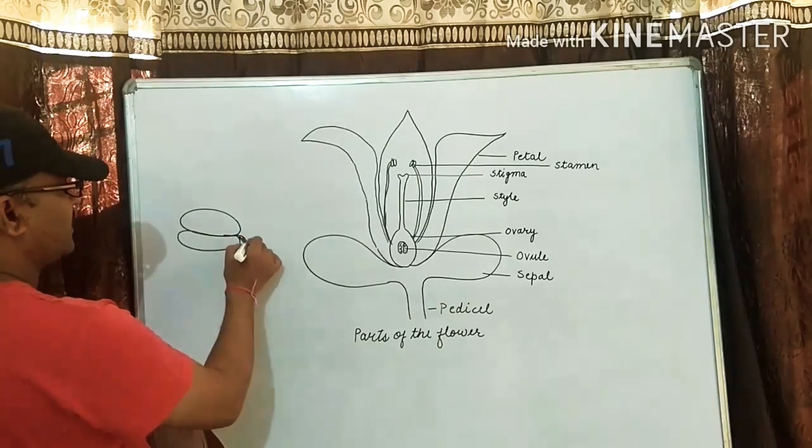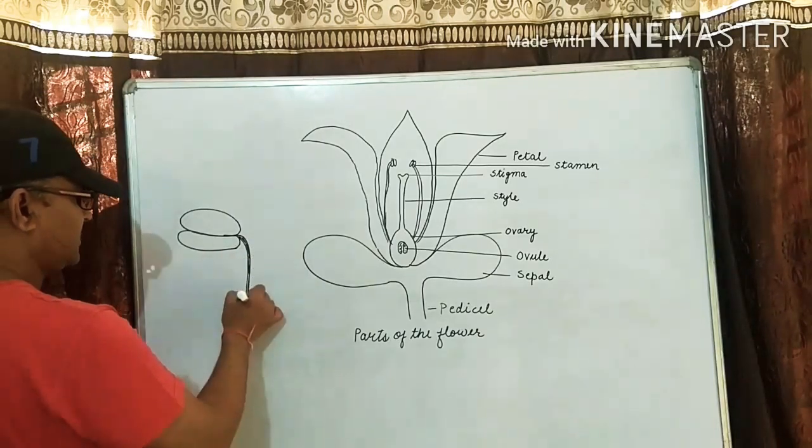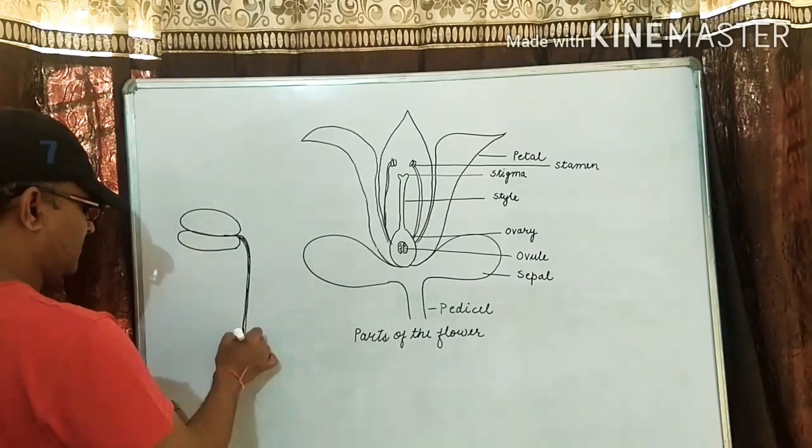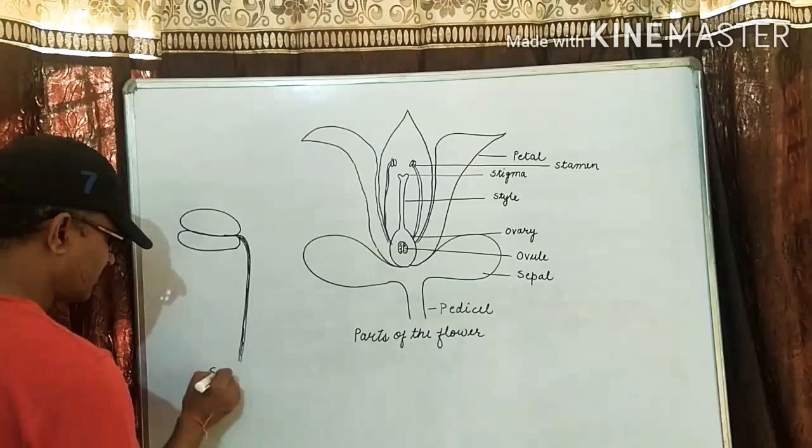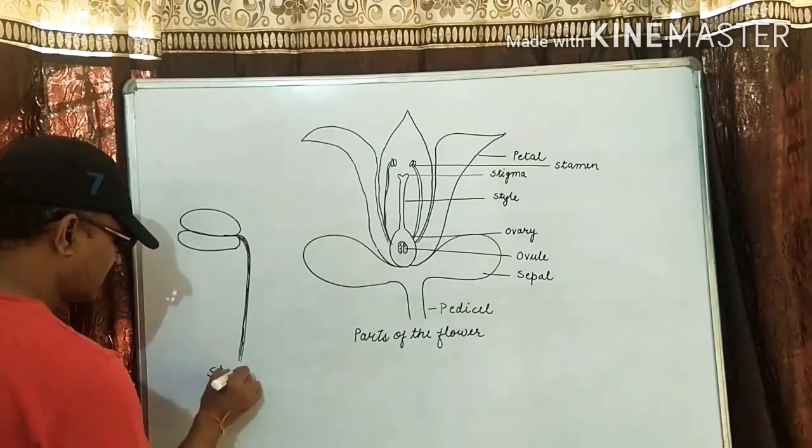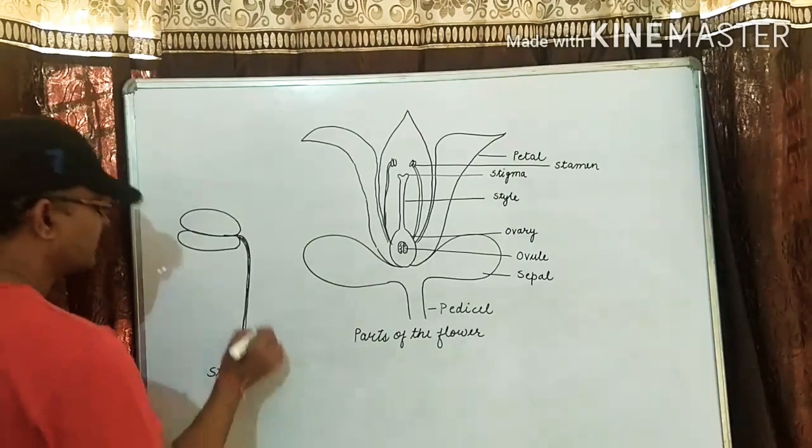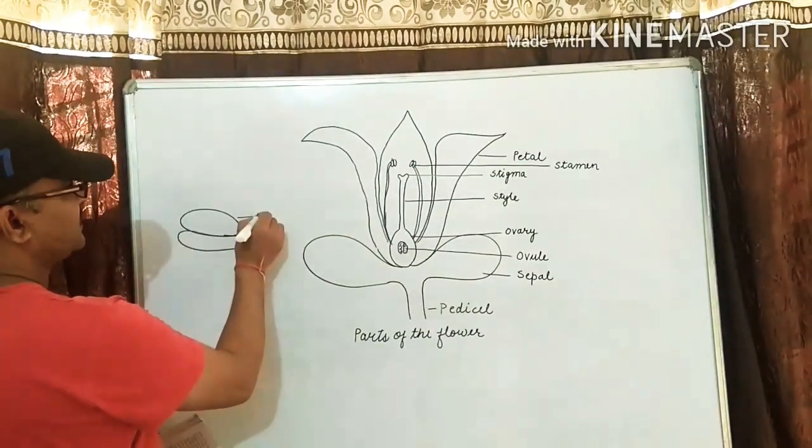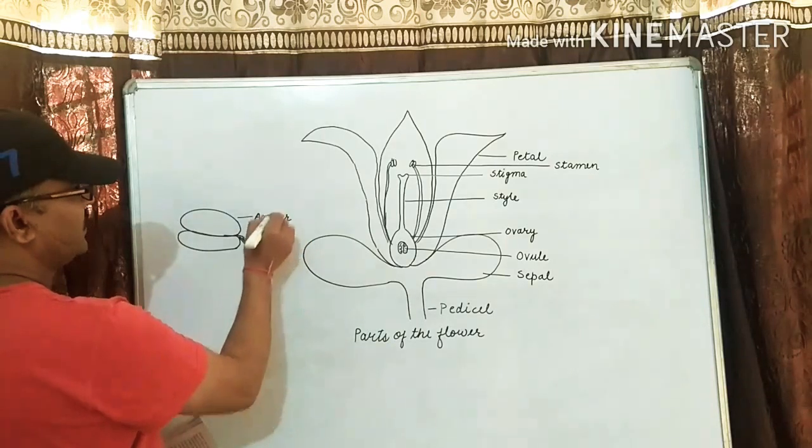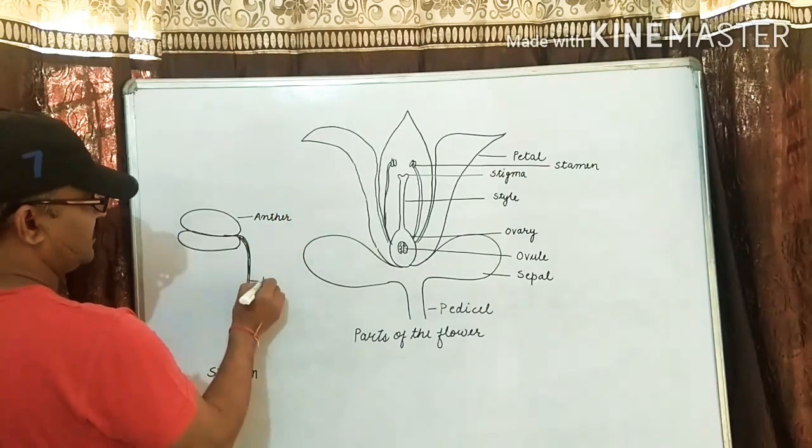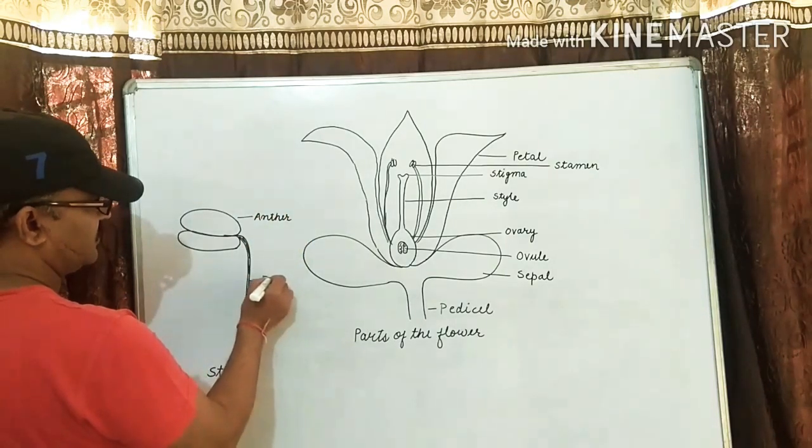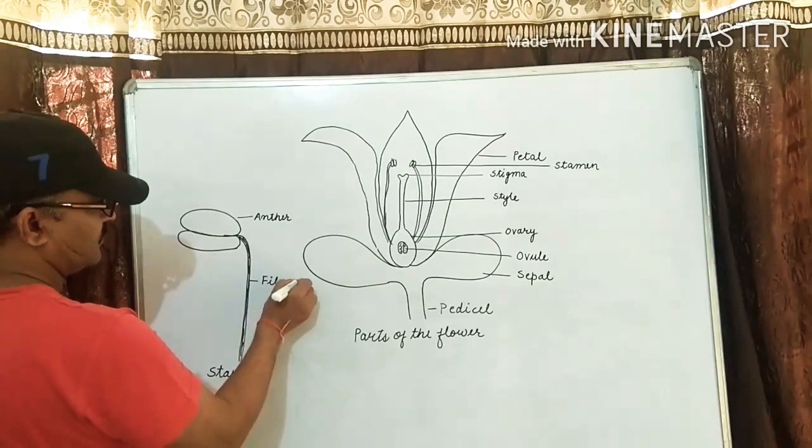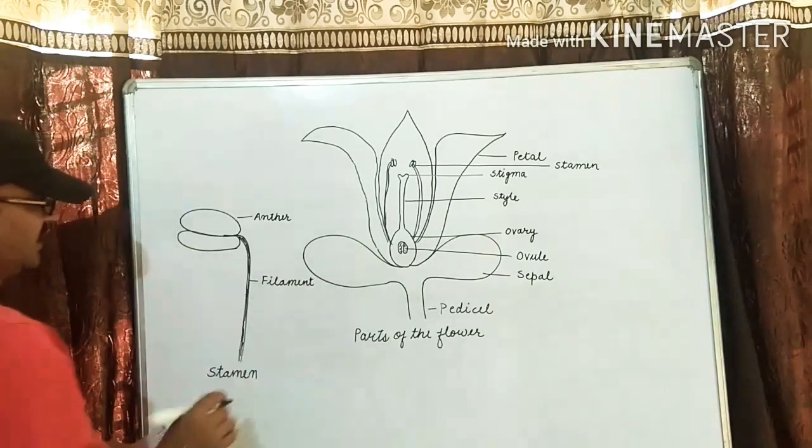This is the stamen, it has two parts, one is the anther and second is filament. Clear?